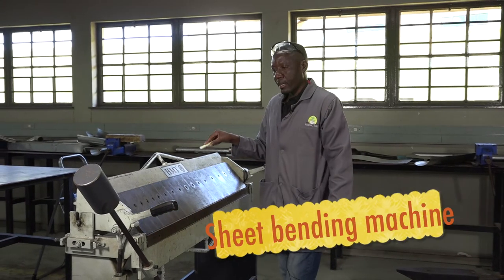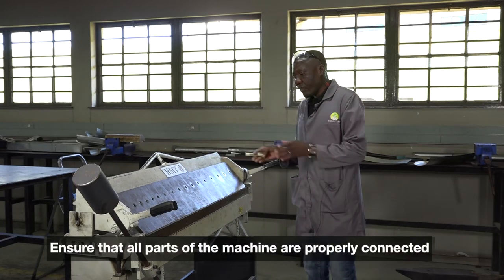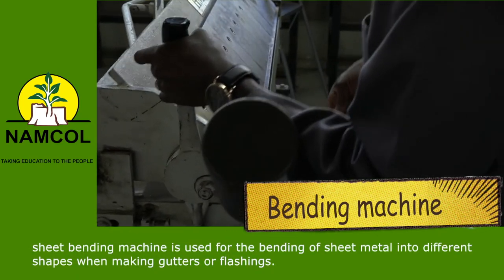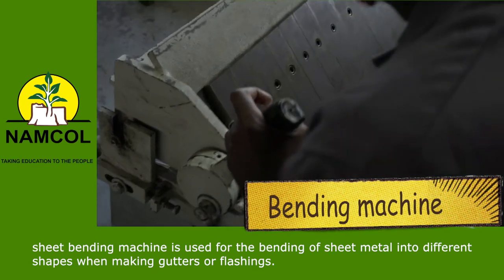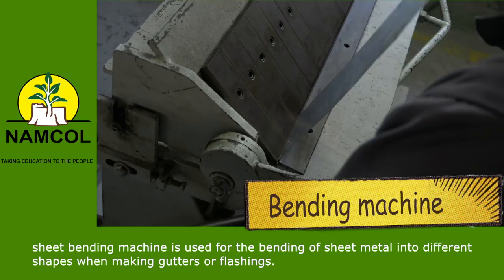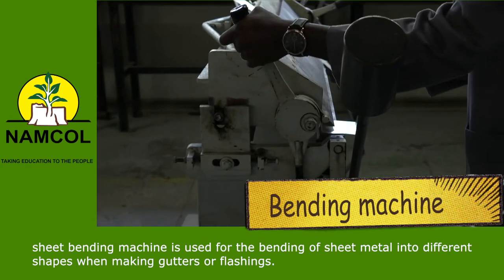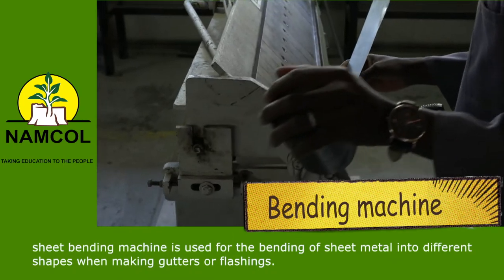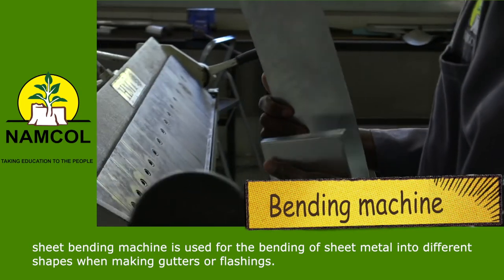As you see here, this is a bending machine. This bending machine has a different function from the other machines. When talking about the bending machine, we look at the safety precautions as well as the functions. Before you operate the machine, check the surrounding for safety precautions, and also check if the bending bits are well tightened. The bending machine is basically used to bend sheet metal in different shapes — for example, bending gutters and flashings.